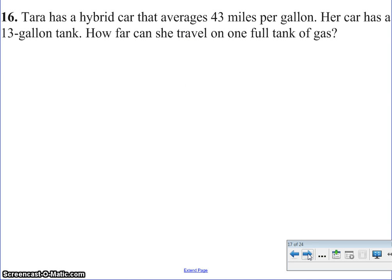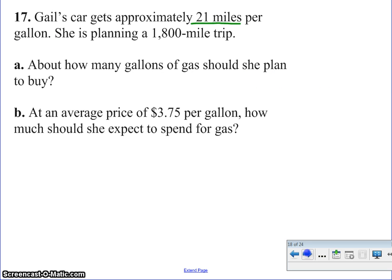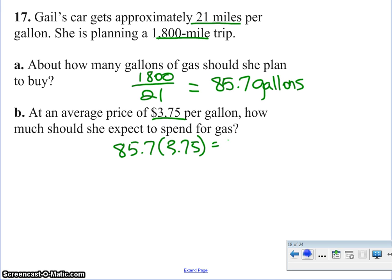16, Tara has a hybrid car, 43 miles to the gallon. 13-gallon tank. How far can she travel? Well, 13 times 43, I end up with 559 miles. Gail's car gets approximately 21 miles per gallon. She's planning an 1,800-mile trip. About how many gallons of gas should she plan to buy? So if I take the 1,800 and divide it by the 21 miles per gallon, I get 85.7 gallons is what she needs to buy. At an average price of 375, how much is that going to cost? So I'm going to take the 85.7, multiply it by that 375, and it's going to cost about $321.43 for her to make this trip.